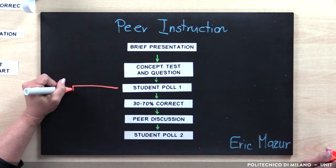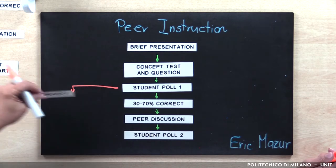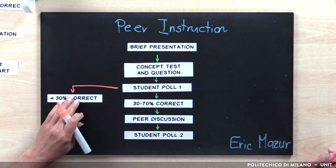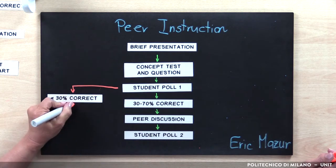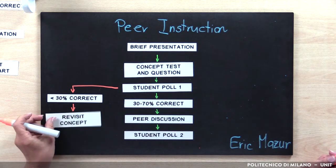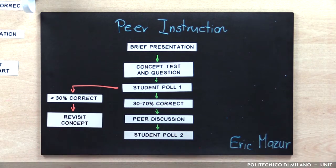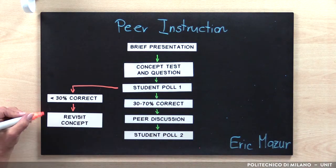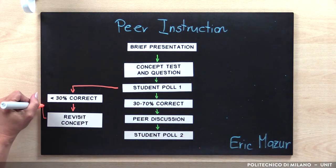If, after the first vote, there is less than 30% of good answers, the instructor adds some information and repeats the process from the beginning.